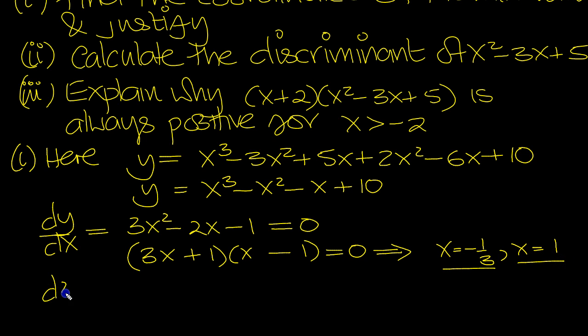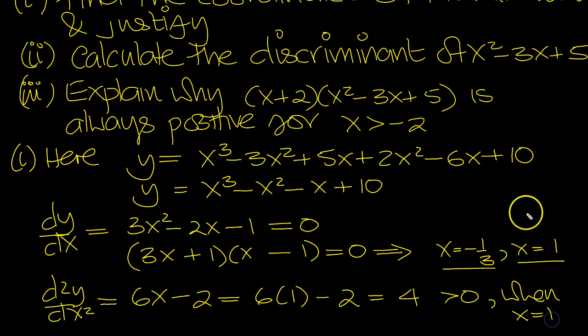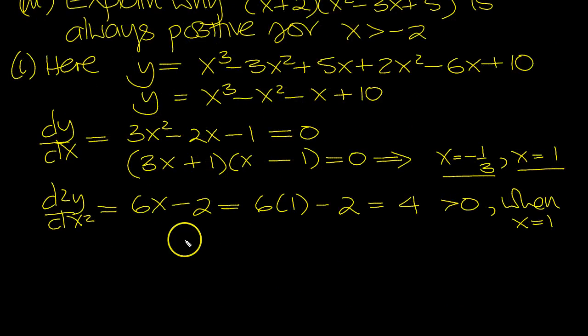Now the second derivative. Differentiate again. The 2 comes with the 3 to make 6x to the 1 less, minus x goes to 1, so it's minus 2 lots of 1, which is 2. And the constant goes to 0. When x equals 1, put it in, 6 minus 2 is 4, which is greater than 0 when x equals 1. So we've put that in. We've got positive, so it's a min.